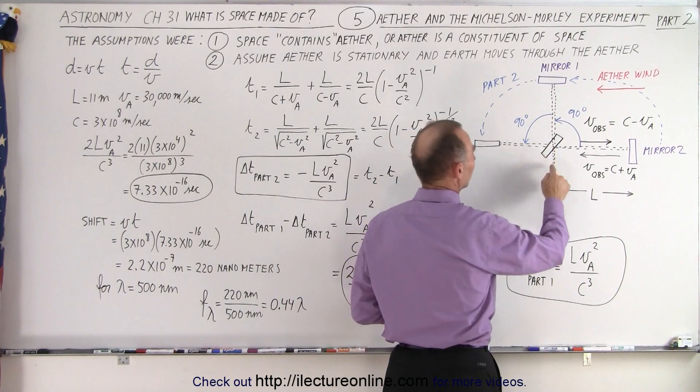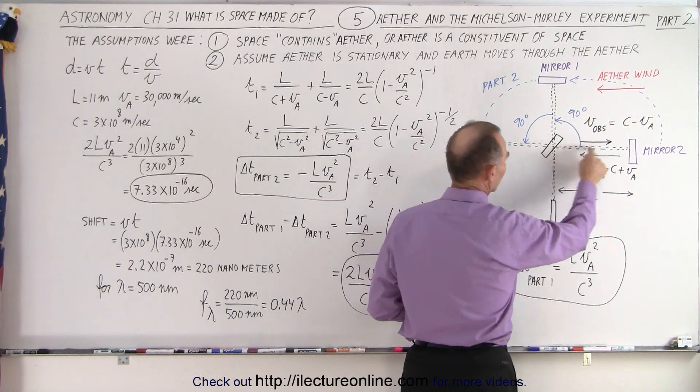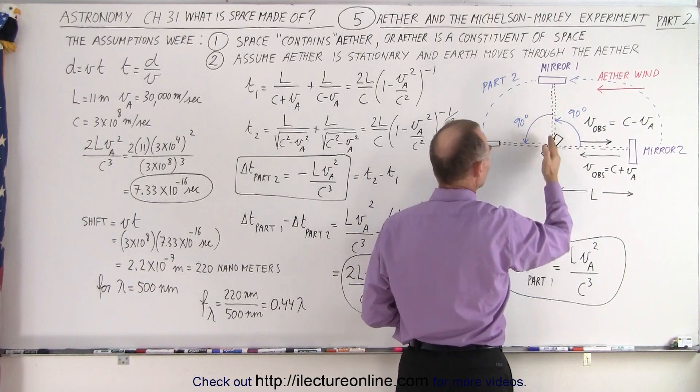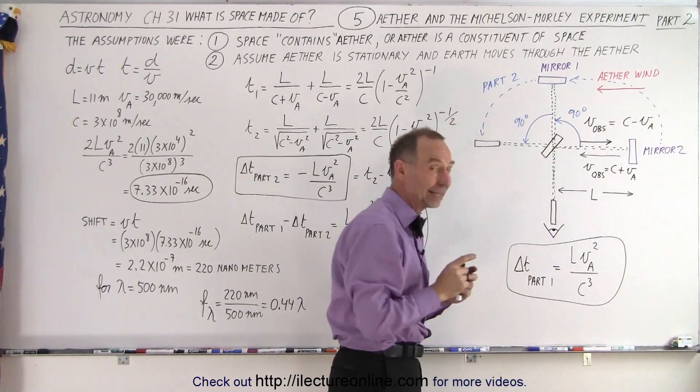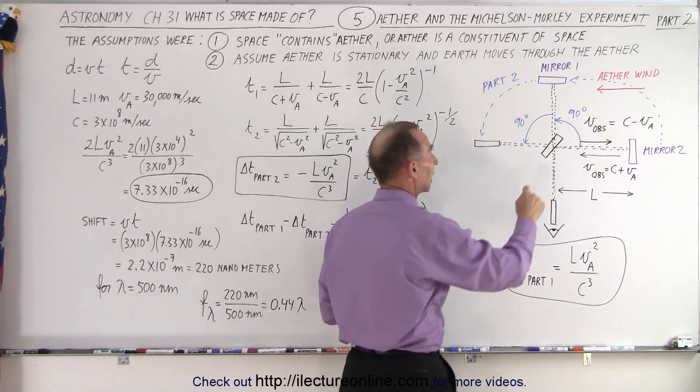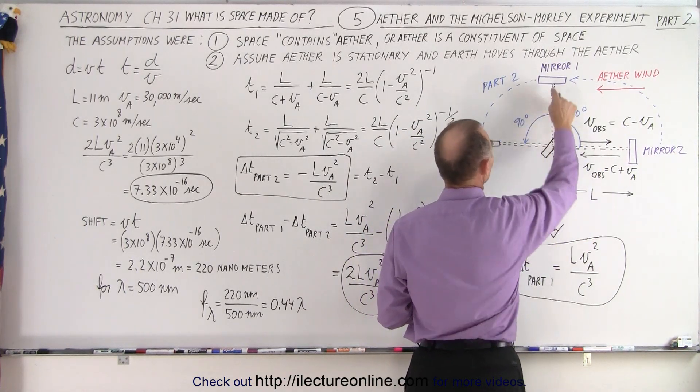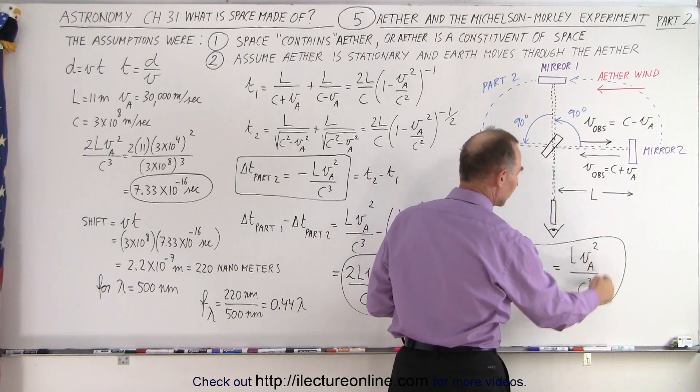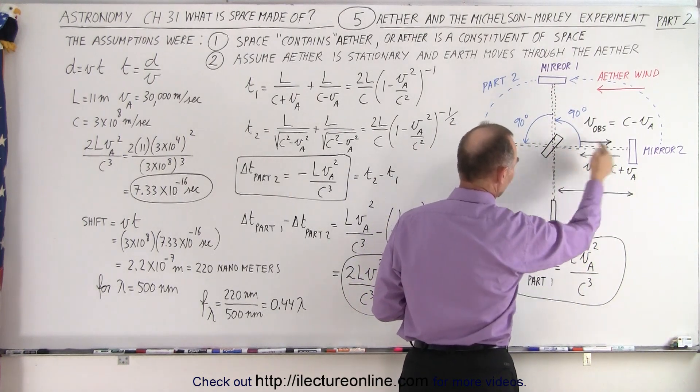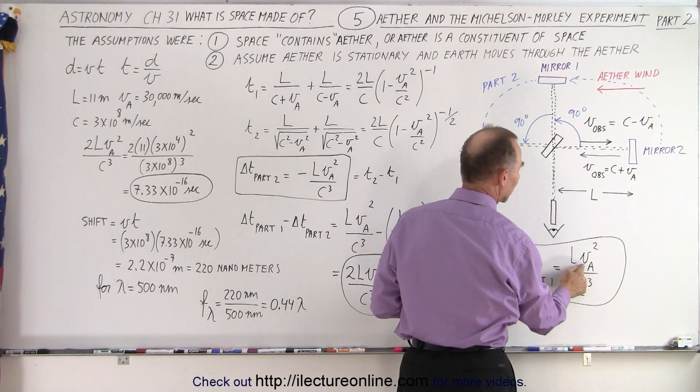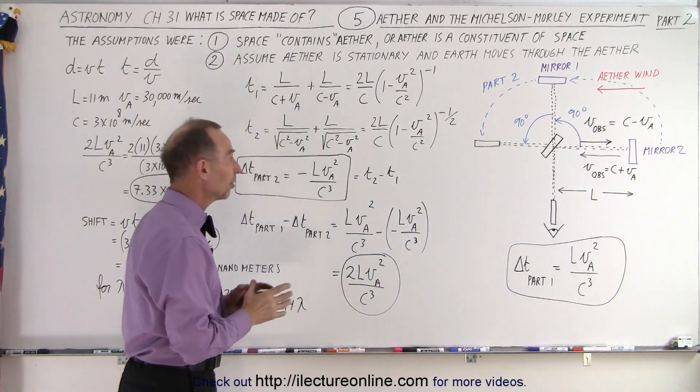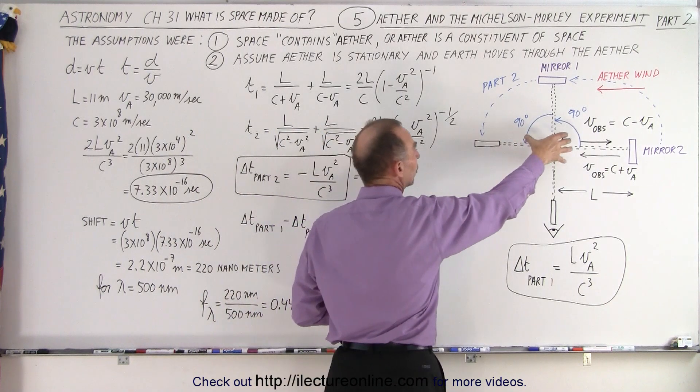The glass would partially reflect the light to mirror number two and back, and would transmit part of that light to mirror one and back. We were able to calculate the difference in the time that light took to go from there to there to here and from here to there and back. The difference in time from part one was calculated to be the length, the distance, times the velocity of the ether squared divided by the velocity of light cubed.